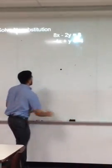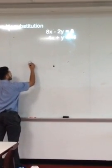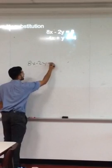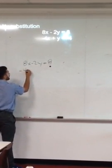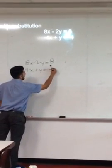Alright so I'm going to rewrite my columns. Eight x minus two y equals eight and negative four x plus y equals negative four.